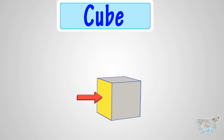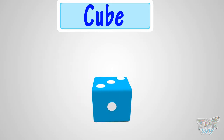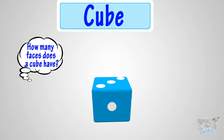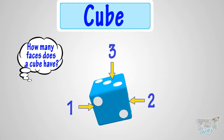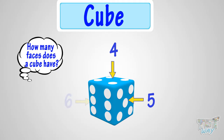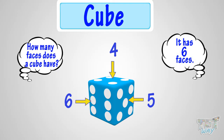Let's take the example of a dice. To learn how many faces a cube has, a dice is a perfect example of a cube. Let's count the faces of a dice, which is a cube. 1, 2, 3, 4, 5, 6! Yeah! 6 faces! Also, all faces of a dice are equal and square in shape.